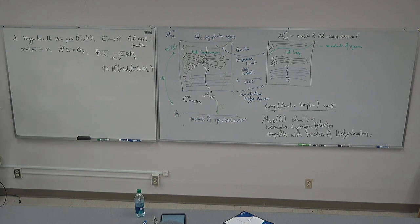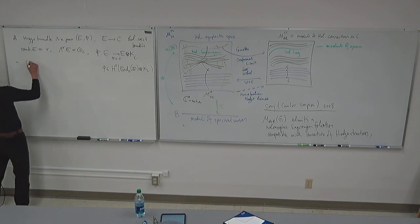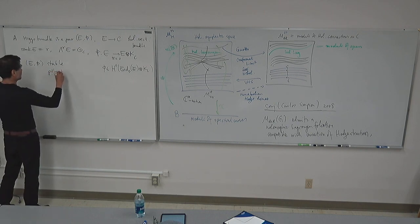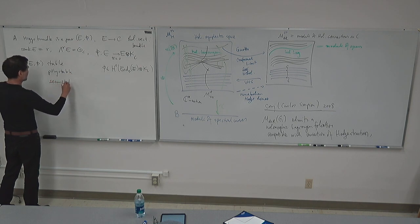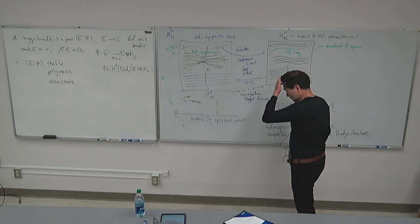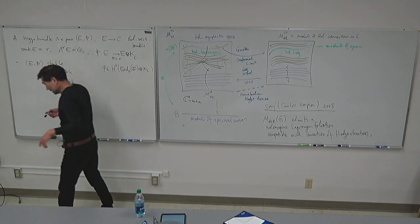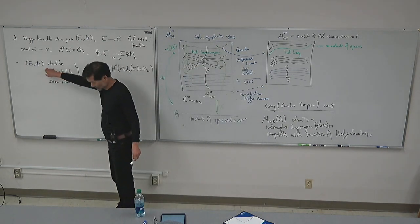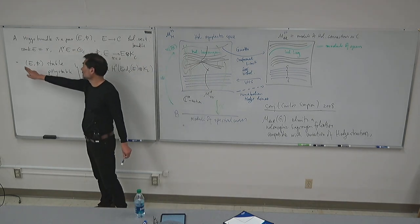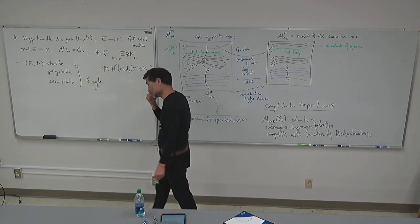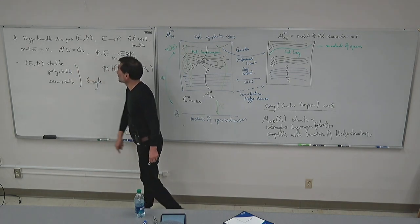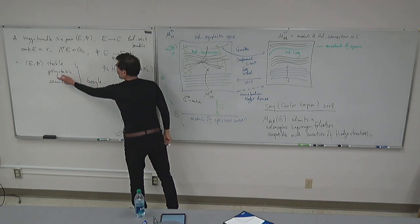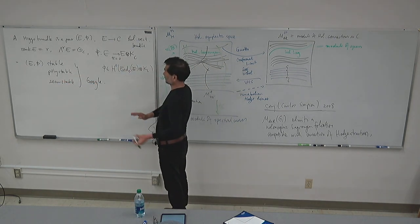The pair (E, φ) can be stable, semi-stable, or poly-stable. Three different layers of stability conditions. Stable means you don't have any endomorphism — it's a major consequence so that you can define a moduli space. Semi-stable is close to stable, but the stable objects are always open, so you want to close the space of stable objects, and you need semi-stability. Poly-stable simply means it's a direct sum of stable objects with certain degree conditions.